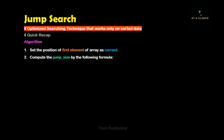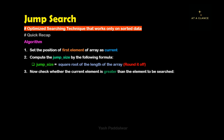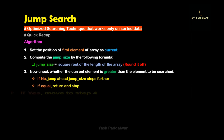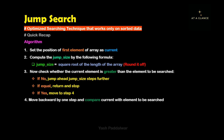Now let's have a quick recap. The first step is to assign the first element as the current element. Then we need to compute the jump size by the formula: square root of the length of the array. Next we check whether the current element is greater than the element to be searched. If not, we need to jump jump-size ahead. If they are equal, we return the position and stop. If the current element is greater than the element to be searched, we move to step 4.